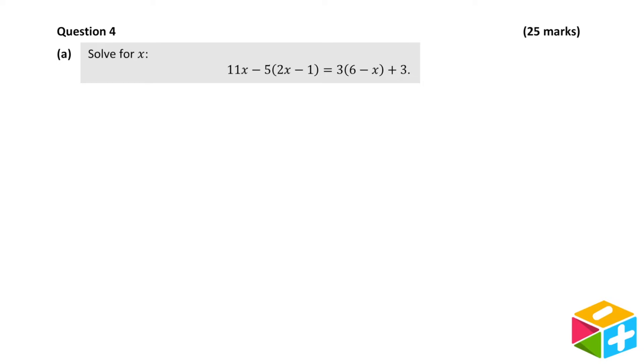Solve for x: 11x minus 5 times 2x minus 1 equals 3 times 6 minus x plus 3. Since we're asked to solve for x, our goal here is to isolate x all by itself on one side of the equation.